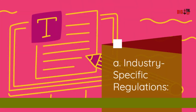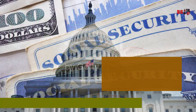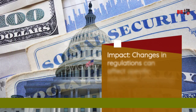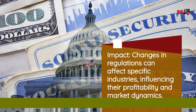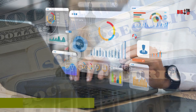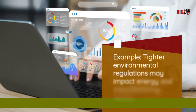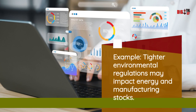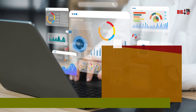Industry-specific regulations impact: changes in regulations can affect specific industries, influencing their profitability and market dynamics. For example, tighter environmental regulations may impact energy and manufacturing stocks.